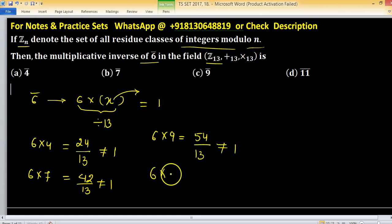But 6 into 11, we are getting 66. And 66 divided by 13, we are getting 1. So 11 bar, or simply 11, is the multiplicative inverse of 6. Option D is correct.